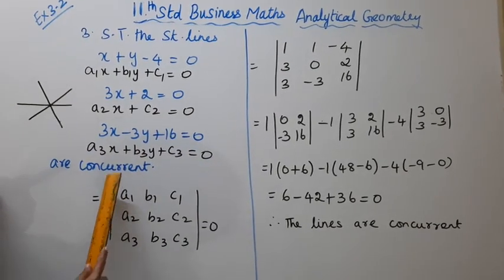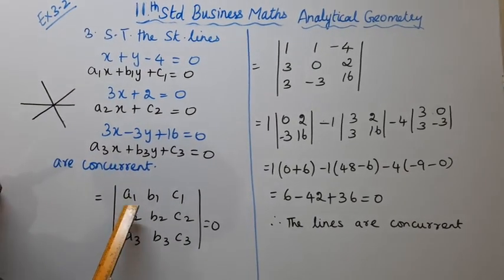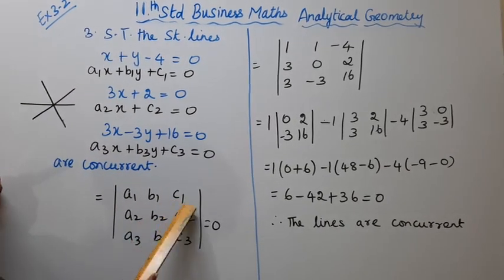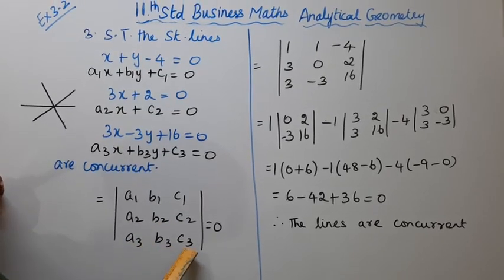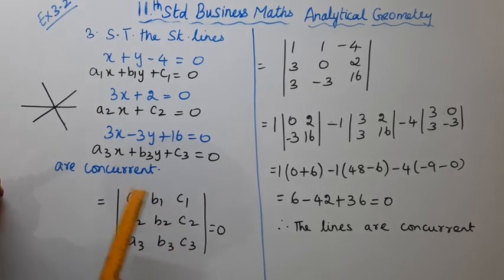Concurrent formula: the determinant (modulus) of the 3x3 matrix with elements a1, b1, c1 in the first row; a2, b2, c2 in the second row; and a3, b3, c3 in the third row.